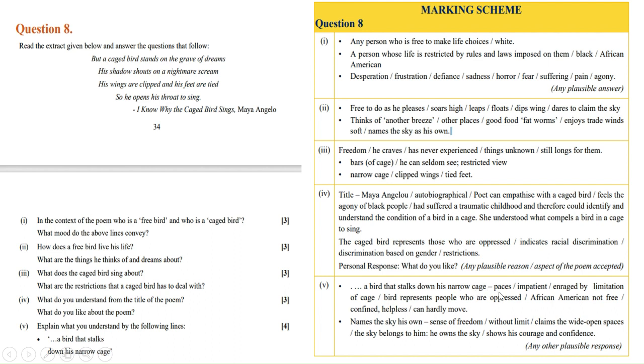Fifth question: explain what you understand by the following lines. 'A bird that stalks down his narrow cage' - this means it's impatient, enraged by the limitation of the cage. The bird represents people who are oppressed. African Americans are not free, they are confined, helpless, they can hardly move. 'The sky his own' means that without limit, it claims the wide open spaces. The sky belongs to him, he owns the sky and shows his courage and confidence. Write this answer comparing African Americans or white Americans in the context of the poem itself, free bird and caged bird.